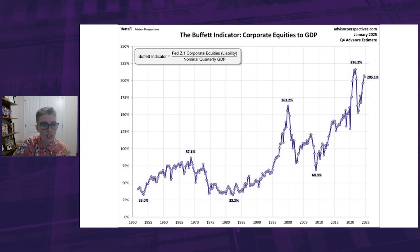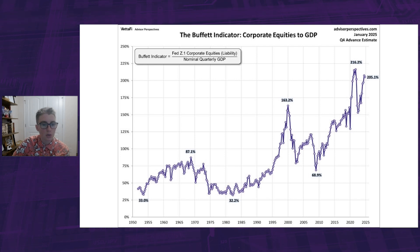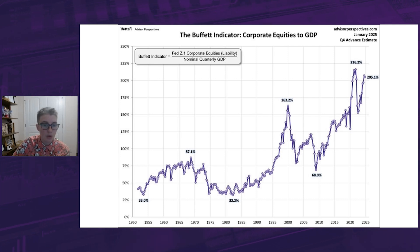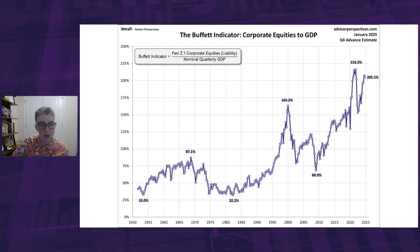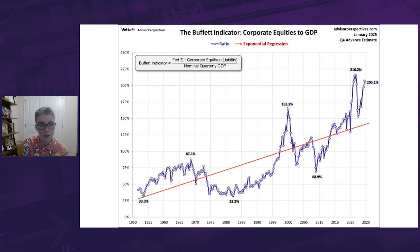This chart also includes key highs and lows, such as the dot-com peak in 2000, where it was at 163.2%, the Great Recession trough in 2009, where it fell to 68.9%, the all-time low from the early 1980s of 32.2%, and the all-time high just a few years ago in October 2021 of 216.2%.